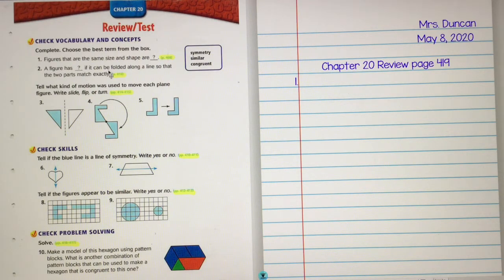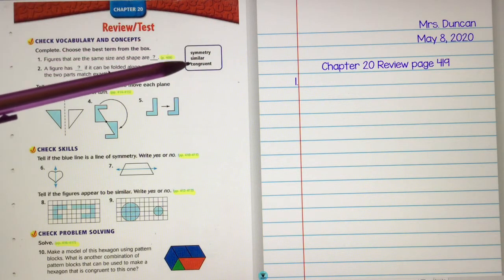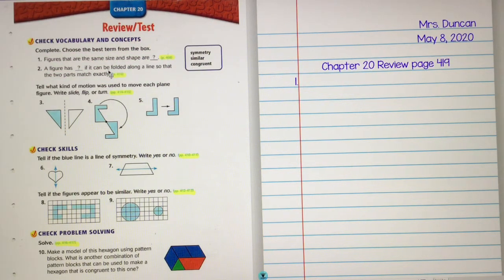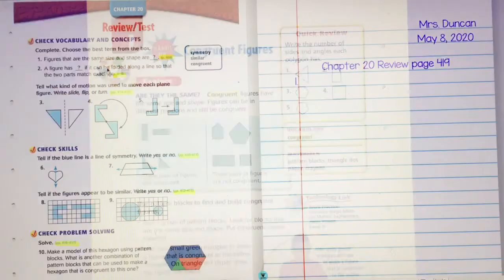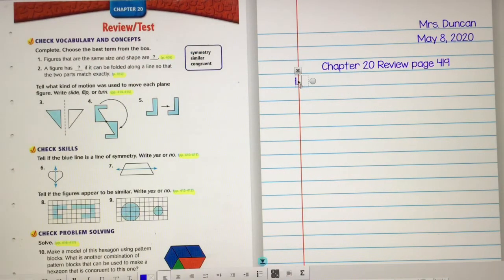So here we go, numbers one and two are vocabulary. The vocabulary choices I have are symmetry, similar, or congruent. These are my choices right here. So number one, figures that are the same size and shape are. It says to go to page 408. Congruent figures have the same size and shape. There's my answer right there. So the vocabulary word I'm looking for is congruent. So I'm going to come over here to my sheet of paper.